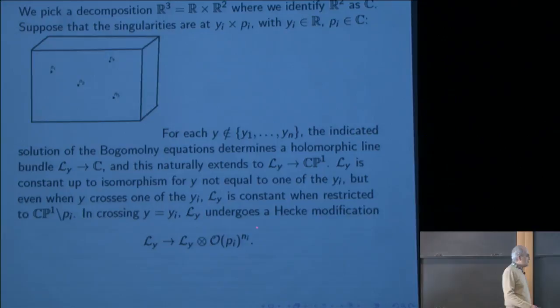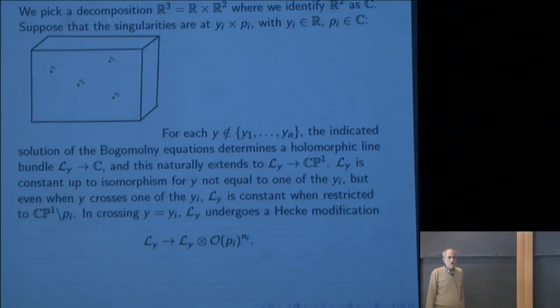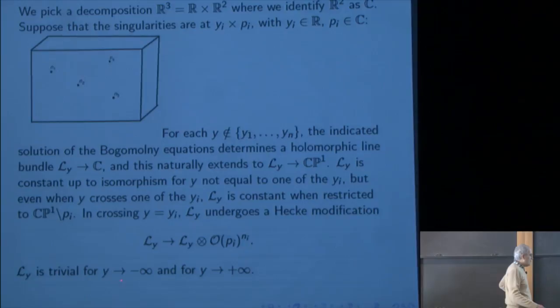That follows from topological considerations involving the first Chern class. Because the sum of the n's is 0, L_y is canonically trivial as y goes to ±∞. So we have a solution of the PDE, and it describes a sequence of Hecke modifications from a trivial bundle over CP^1 to itself.